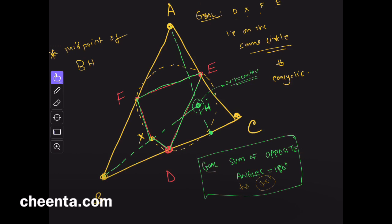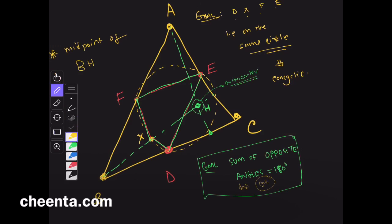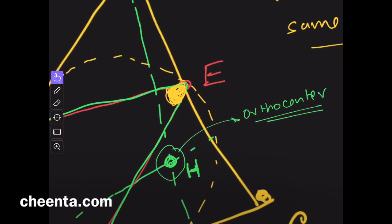So, the first step is to understand this particular angle. Maybe I can use a different color. Let's use the color yellow here. So, let's look at this particular angle, which is right here, this one, angle FED. So, maybe I can zoom in a little bit. So, this is the angle, angle FED.